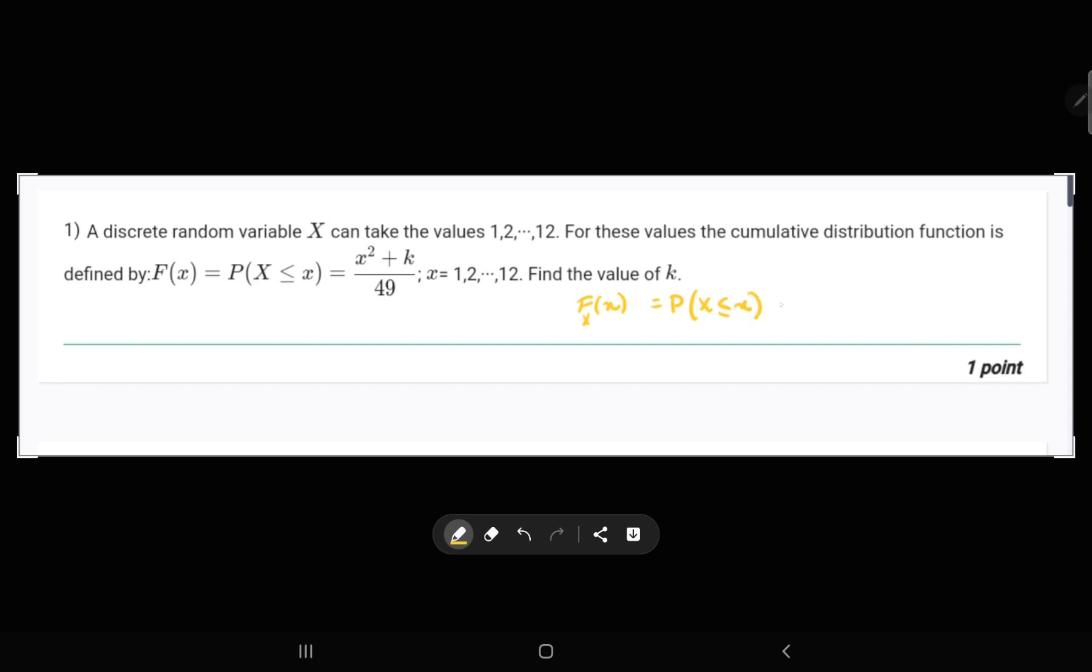Which will be equal to: if x is less than 1, we will get value 0. If x is equal to 1 and 12, I mean x belongs to the range 1 to 12 including 1 and 12, we will get value (x² + k)/49. And otherwise, for any value of x greater than 12, we will get value 1.